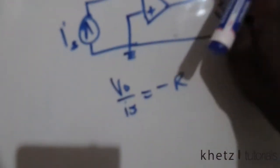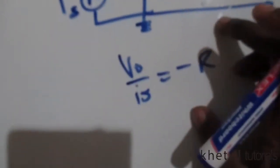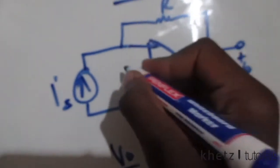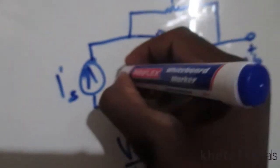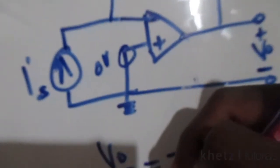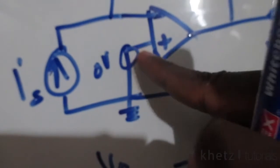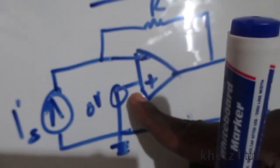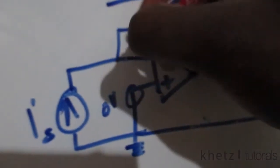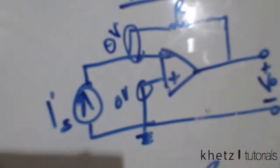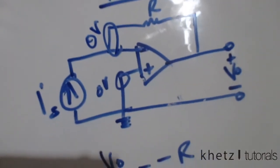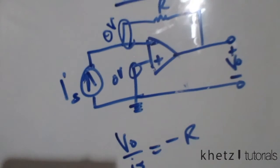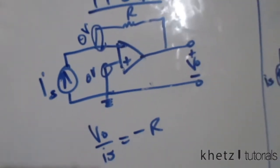At this point we have zero volts because you only have a wire connected to ground, so at that point we have zero volts. Now, since the terminal voltages are equal, we are also going to have zero volts here.